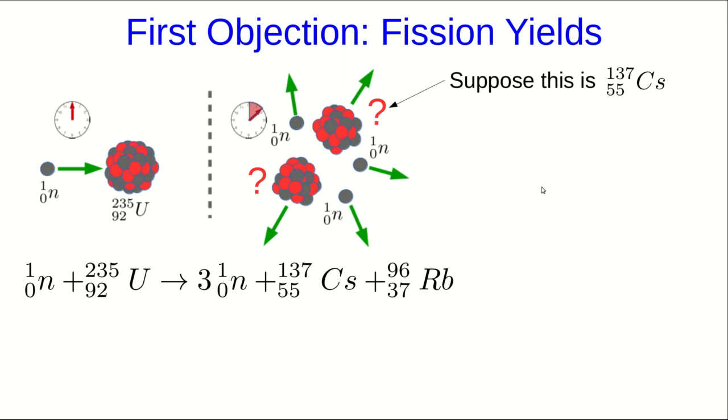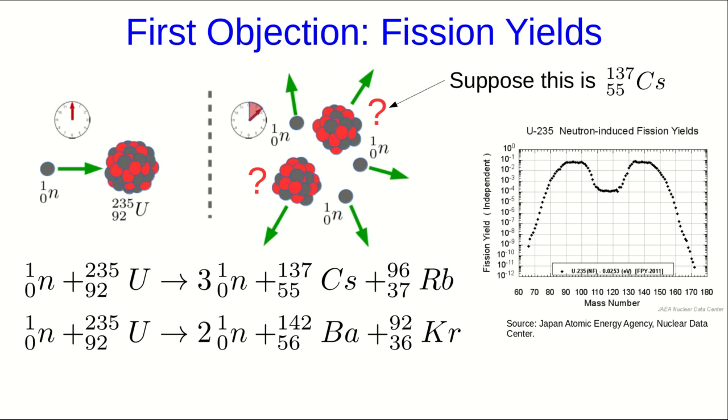The first problem is that I did this for a specific fission reaction. But as I've already pointed out, there are many possible ways that, say, a U235 nucleus can split. And so if I had chosen a different reaction, I would have come up with a somewhat different value for the energy per reaction.